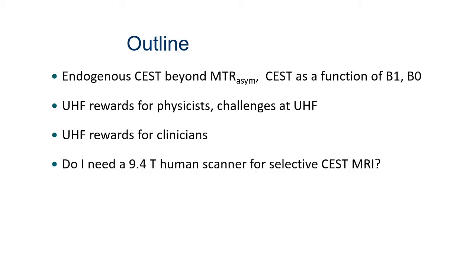A quick outline: endogenous CEST — so nothing applied, no glucose injected, no other contrast agent — but endogenous CEST beyond MTR asymmetry. You saw a lot about asymmetry at 3T already. I will speak about CEST as a function of B1 and B0, then the rewards for physicists — why we like ultra-high fields — but also the challenges for CEST imaging at ultra-high fields, and of course the rewards for clinicians. So why should we send a patient to get an ultra-high field CEST scan? And I will finish with the question: do I now need a 9.4T human scanner for selective CEST MRI?